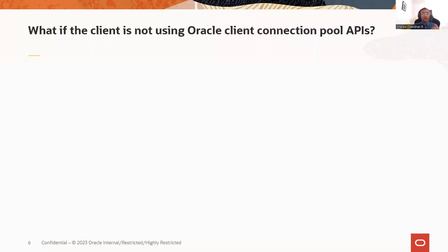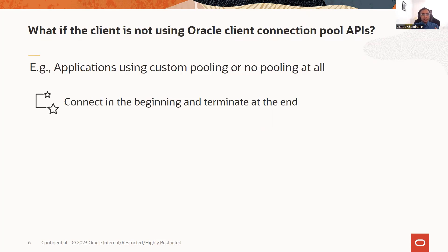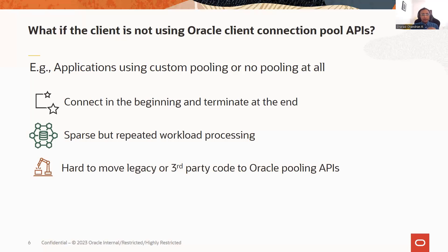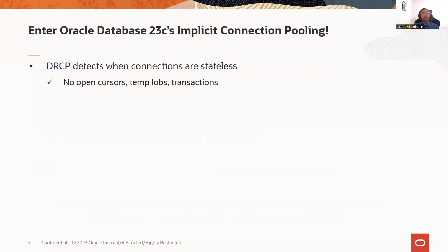What if the client is not using client connection pool APIs? For example, those applications that use custom pooling or no pooling at all — one example is the Hikari connection pool for Java, which does not use the UCP pool of JDBC. In that case, applications will connect in the beginning and terminate at the end with sparse but repeated workload processing. It becomes hard to move these legacy or third-party codebases to Oracle pooling APIs. So is there a way in Oracle database to automatically reuse these idle sessions to minimize database memory pressure and improve scalability further? Not until now, but in 23C we have introduced implicit connection pooling.